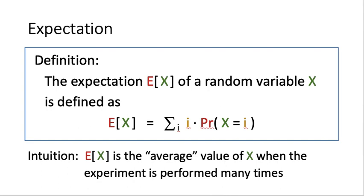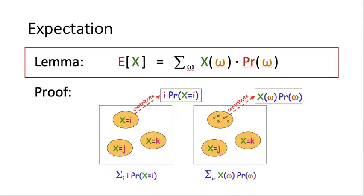This is the definition of expectation, but alternatively we have another equivalent definition, which I will state as a lemma. The expected value of x can also be calculated by looking at all possible outcomes in the sample space. For each outcome omega, we find the corresponding value x(omega), and multiply by the chance that this omega occurs. By doing this summation over all outcomes, we get the same value of expected of x.